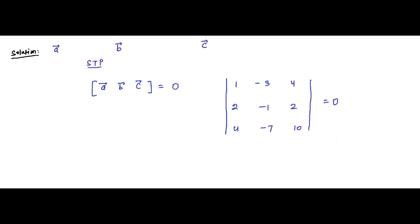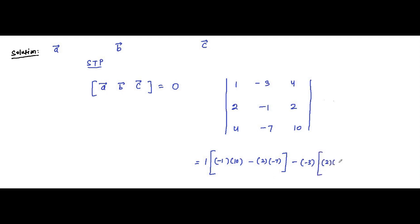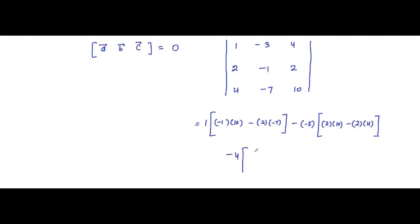Let's check whether it is zero or not. Expanding along the first row: the first term is 1 times (−1×10 − 2×−7); the second term is minus (−3) times (2×10 − 2×4); the third term involves 4 times (2×−7 − (−1)×4).